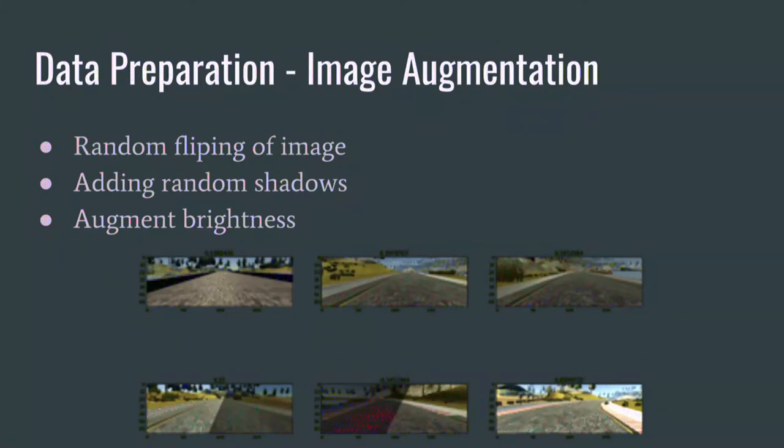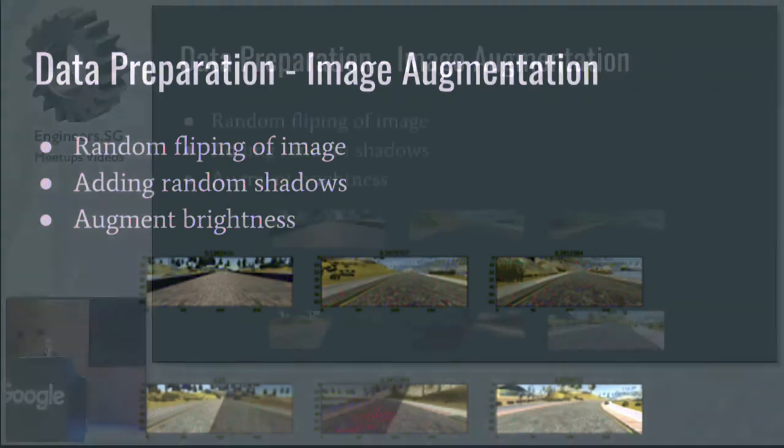And in terms of data preparation, what I learned, in terms of compilation error for images, there's a lot of image augmentation methods and what I used here was purely a random flipping of images left and right. So because the track was very much going around anti-clockwise, so I wanted it to learn how to drive clockwise as well. So I gave a random flip.